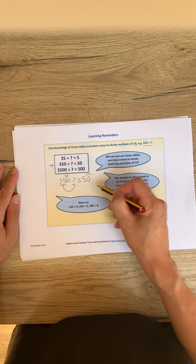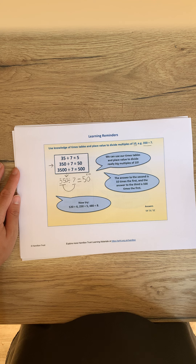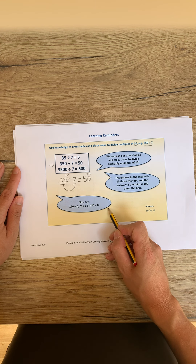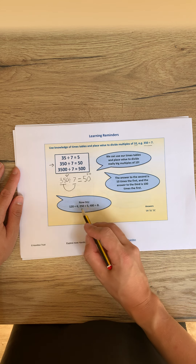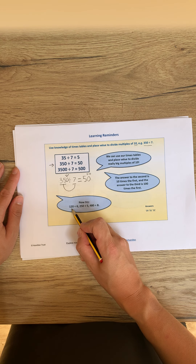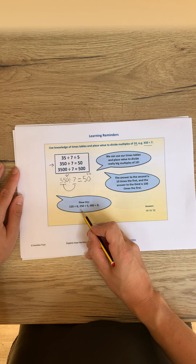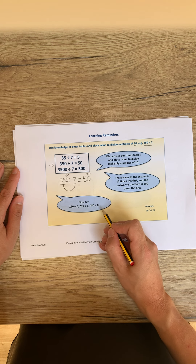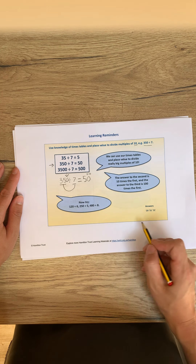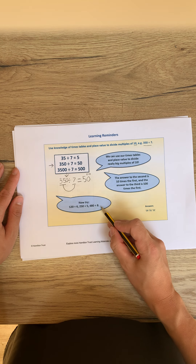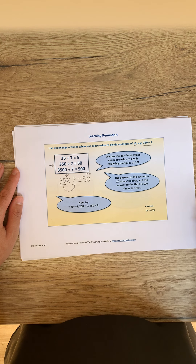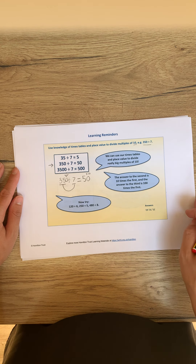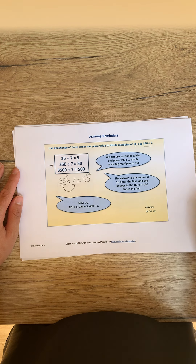So we can use this knowledge throughout the lesson today. There are some example ones here — I'll read them out if they're a bit small on the video: 120 divided by 6, 250 divided by 5, and 480 divided by 8. Using the method I've just shown you, can you work out the answers to these number sentences? Pause the video. The answers are at the bottom of the page if you want to check.